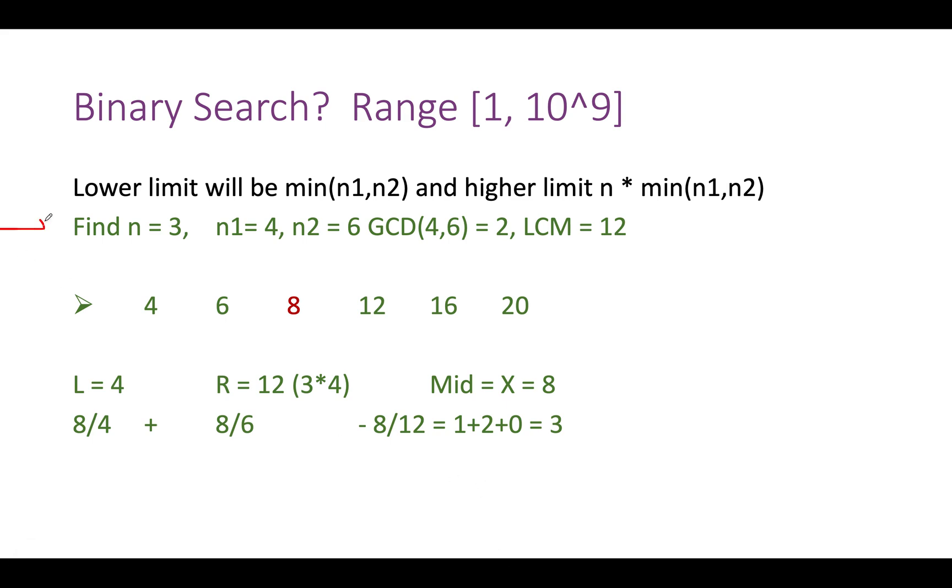Let's take an example. The value of n is 3, n1 is 4, n2 is 6. The GCD of these elements is 2, the LCM is 12. The lower limit of the binary series would be minimum of n1 and n2, which is 4. Let's draw the series: 4, 6, 8, 12, 16, 20 and so on.